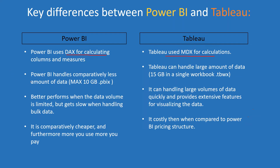In terms of data model size, with a Power BI Pro license, you can publish only 1 GB as a data model. However, with a workspace backed by premium capacity or premium per user, you can publish up to 10 GB. A Tableau packaged workbook (extension .tbwx) can handle approximately 15 GB of data in a single workbook, making it comparatively larger.